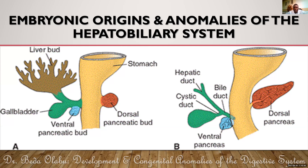Now let's talk about the origin of the pancreas. The pancreas develops from two buds. There is a ventral pancreatic bud, which appears just below the pars hepatica. Then there is a dorsal pancreatic bud, which is on the dorsal side of the foregut. The dorsal pancreatic bud is somewhat bigger compared to the ventral pancreatic bud.